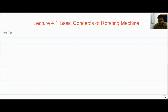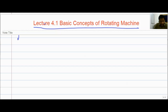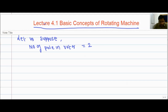We are discussing the generation of torque in a motor or rotor. Let us suppose the number of poles in the rotor is equal to 2.